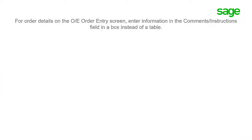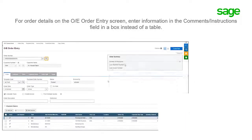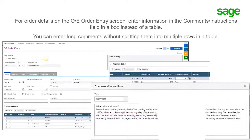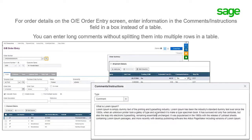For order details on the OE order entry screen, you now enter information in the comments and instructions field in a box instead of a table. This allows you to enter long comments without splitting them into multiple rows in a table.